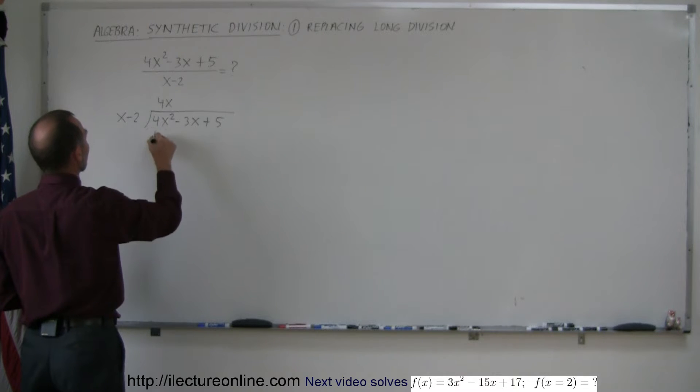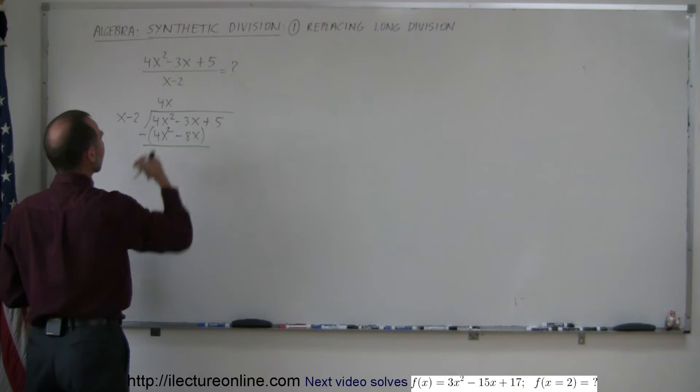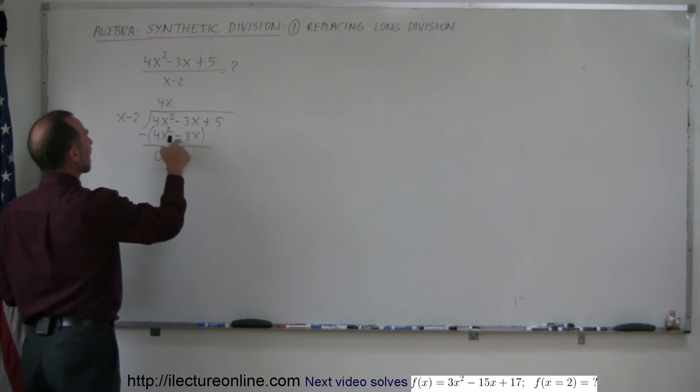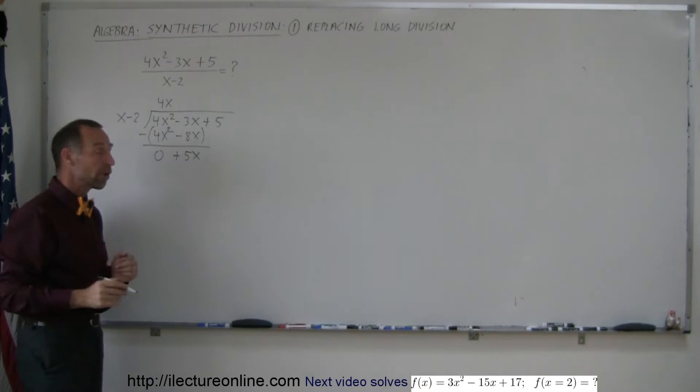So we write 4x here and then we multiply this times both of these. So 4x times x is 4x squared and 4x times a minus 2 is a minus 8x. And now subtract these two terms from what's above. And of course, this minus this gives you 0 and this minus this. Remember, the minus times the minus becomes a plus. It's like adding 8x to a minus 3x. That gives us a plus 5x.